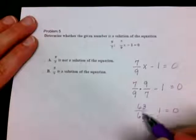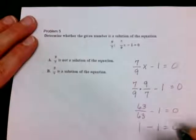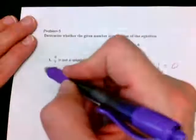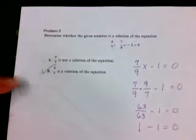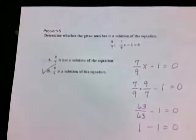We know that 63/63 would give us 1 whole and 1 minus 1 is 0. So we know that 9/7 is a solution because what we got is a true statement.